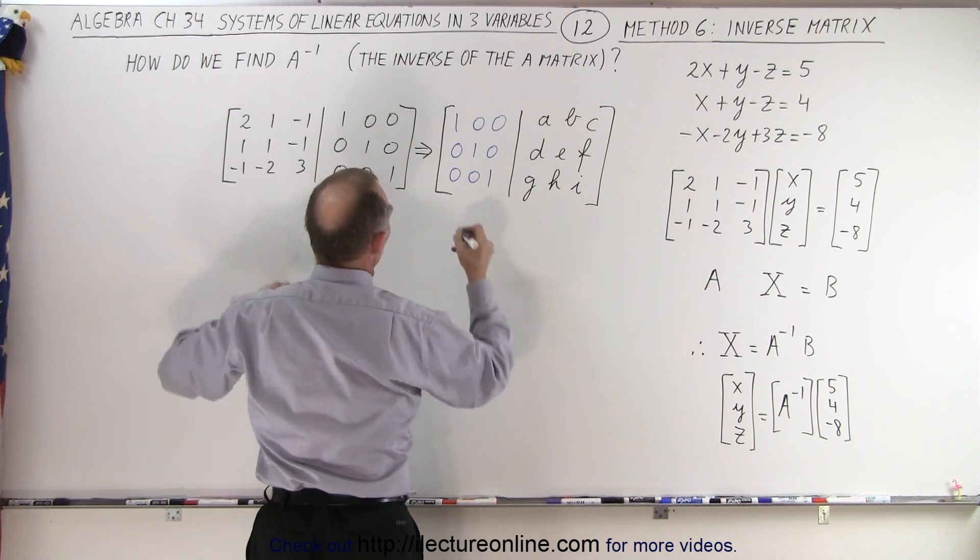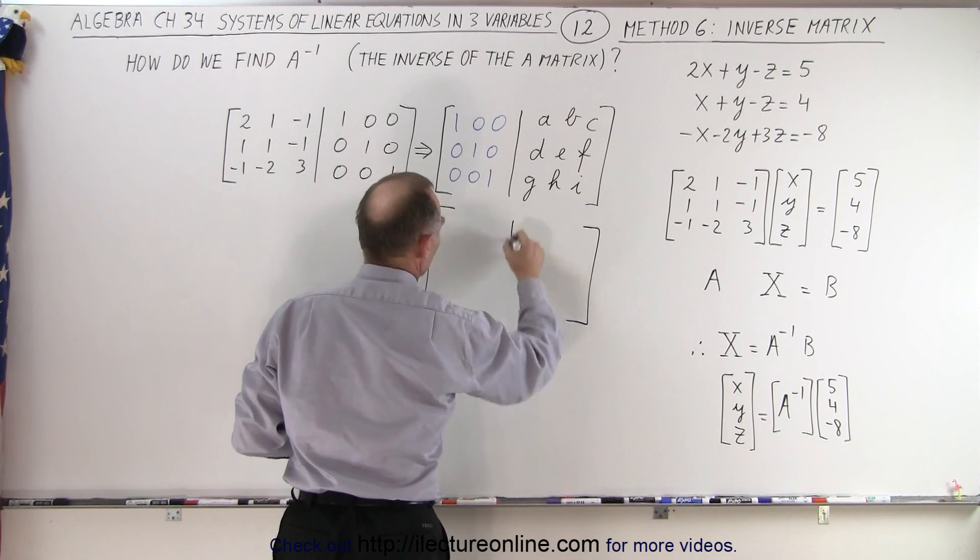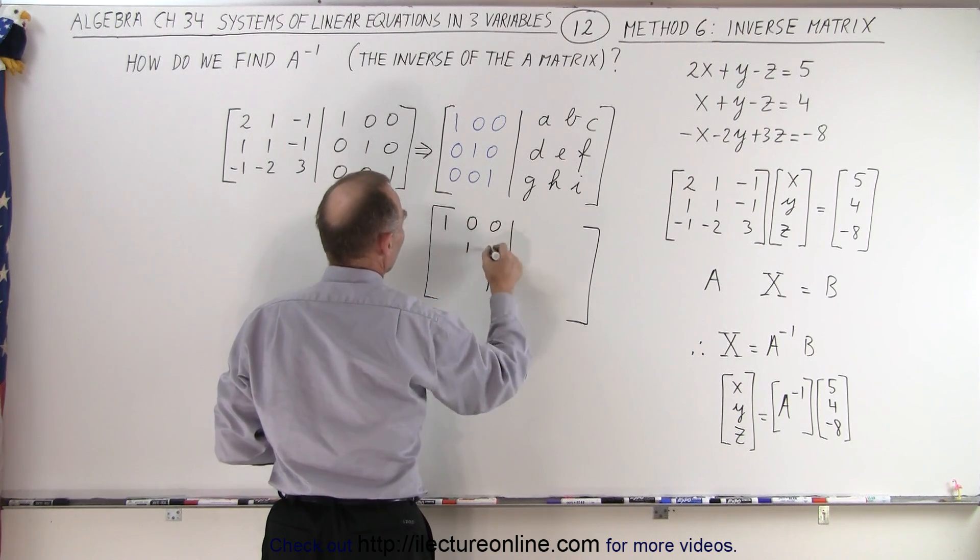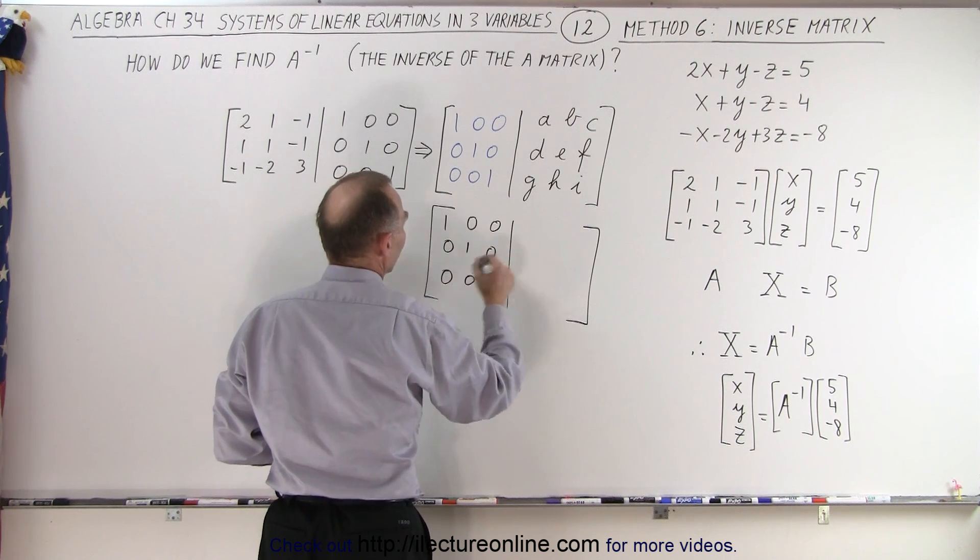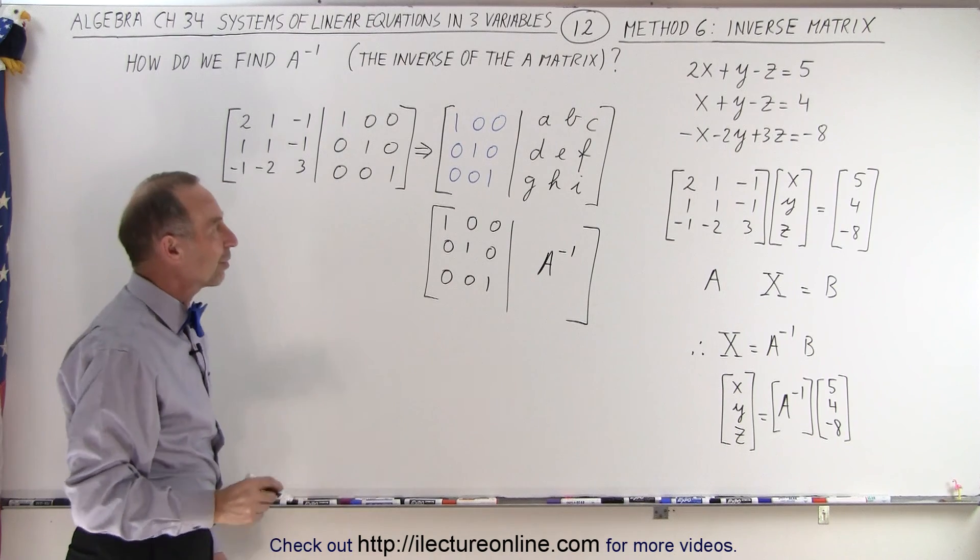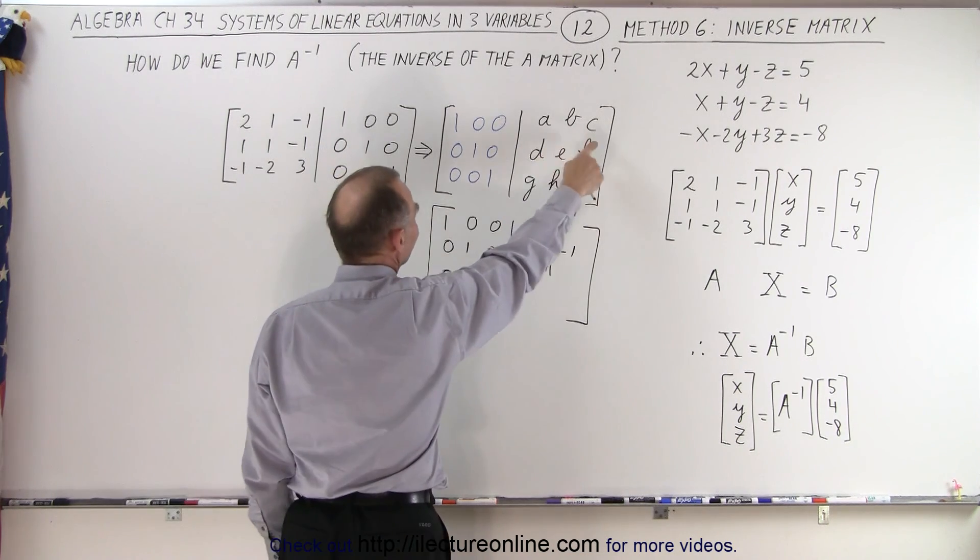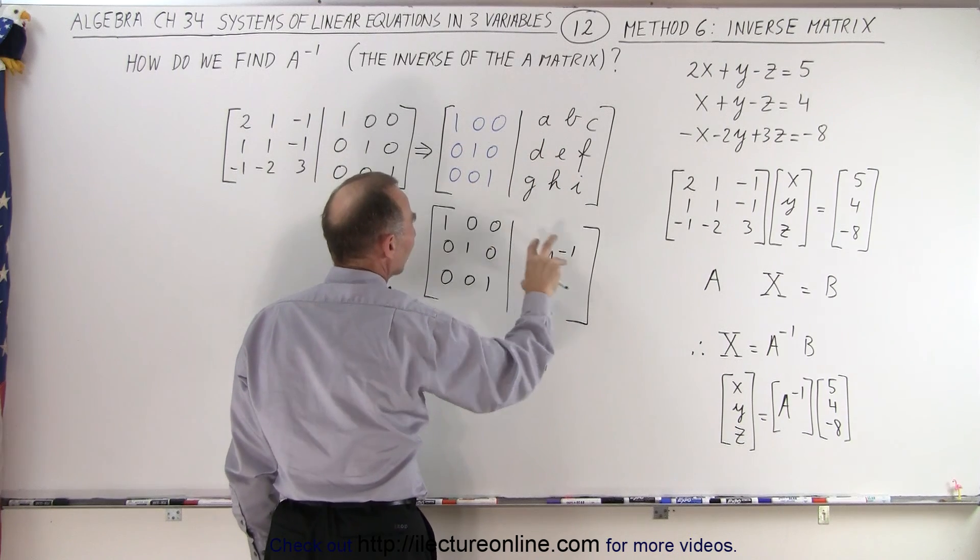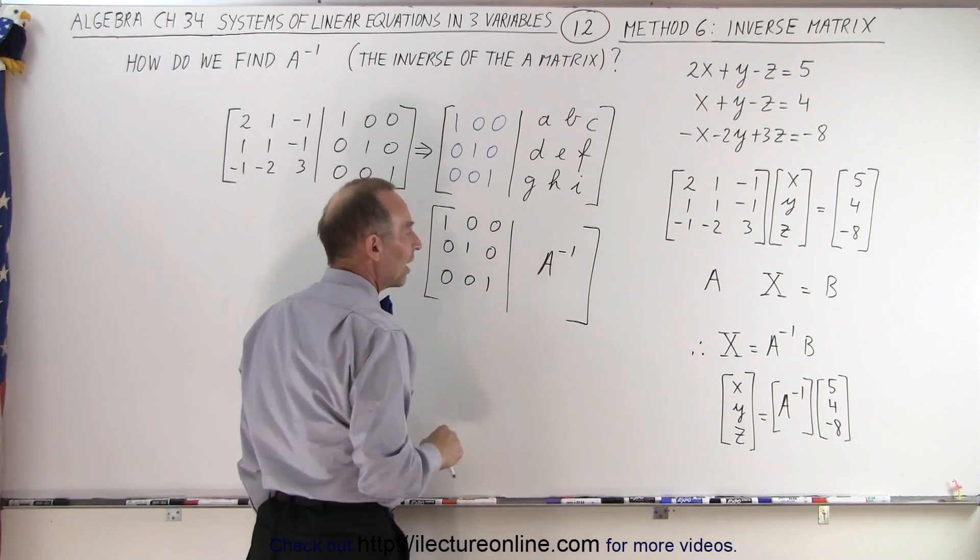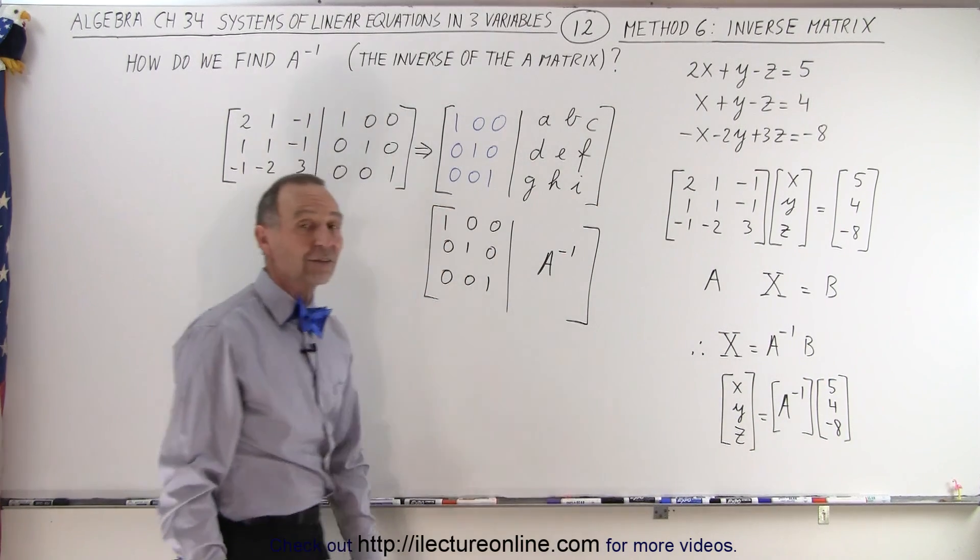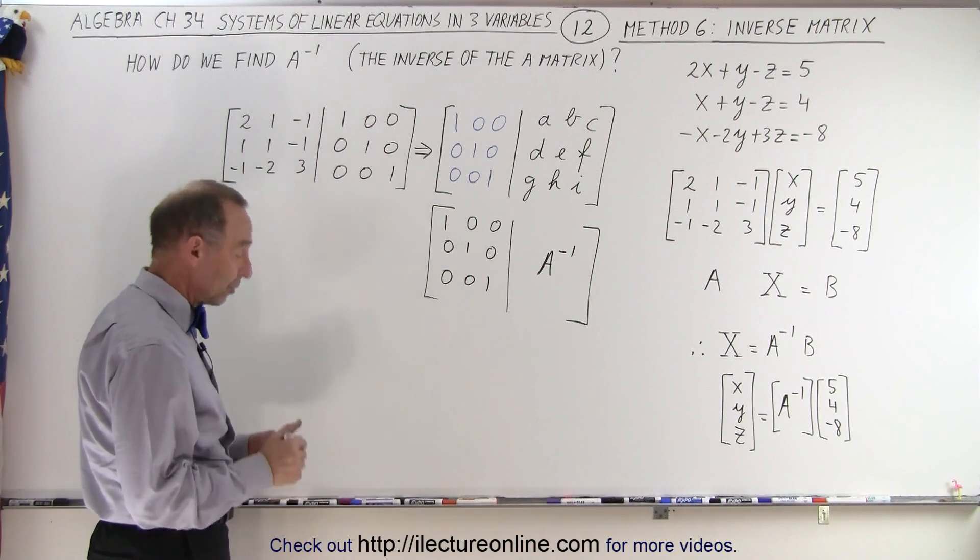In essence, we end up with something that looks like this. Where here we have ones across the diagonal, zeros everywhere else. And this becomes the inverse of the A matrix. So whatever these numbers are, A, B, C, D, E, F, G, H, I, these are simply constants. That forms the inverse matrix of A that goes over here. We multiply times B and we get the values for x, y, and z. And that's how it's done.